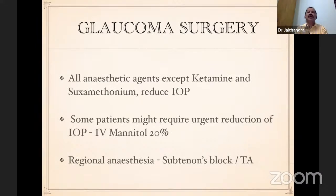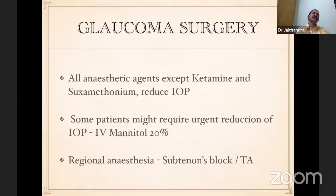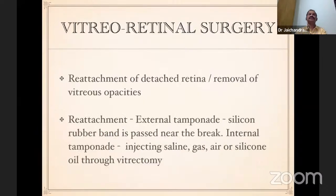Moving on to glaucoma surgery. There are many congenital syndromes associated with craniofacial abnormalities and CNS manifestations. Except ketamine and succinylcholine, most anesthetic agents reduce intraocular pressure. Some adult patients may require urgent reduction of IOP, so IV mannitol 20% may be needed. Regional anesthesia — needle blocks can raise the intraocular pressure — hence for glaucoma surgery, subtenon block or topical anesthesia is preferred.